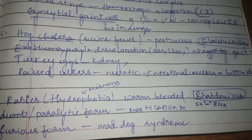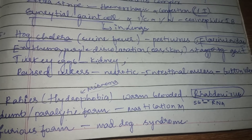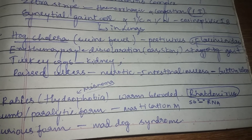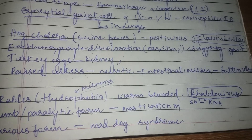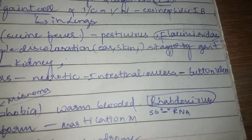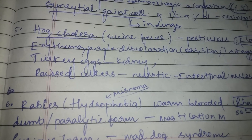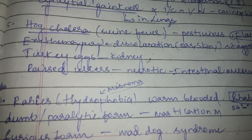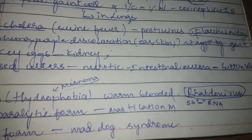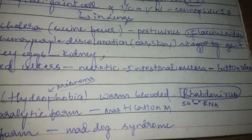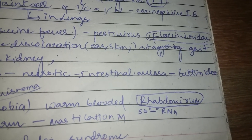This is characterized by erythematous purple discoloration on the skin and ear, staggering gait, and turgid appearance of the kidney. There are also raised necrotic ulcers in the intestinal mucosa, also known as button ulcers.